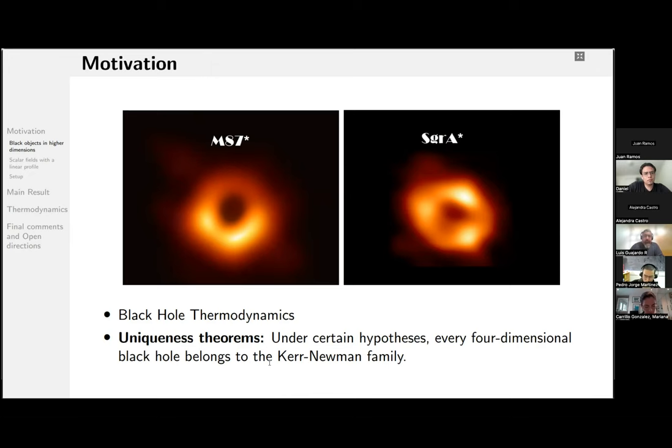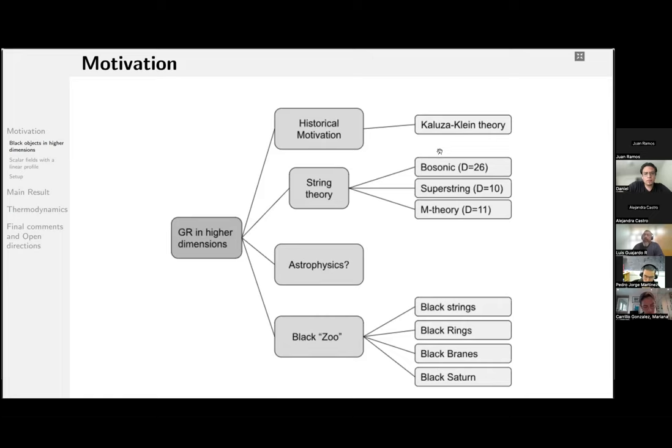So to motivate gravity in higher dimensions, one can set a very long list of motivations. For example, advocating historical reasons, the fifth dimension was theoretically conceived by the Kaluza-Klein model in the attempt to unify gravity with electromagnetism. Or on the other hand, string theory requires higher dimensions for mathematical consistency. Even from an astrophysical point of view, some authors successfully constrained higher dimensional black holes with the Event Horizon Telescope data, supporting the idea that one cannot rule out higher dimensions for observable physics.